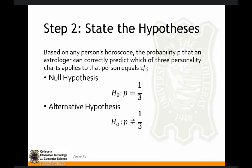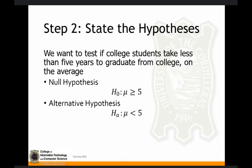Let's look at the difference between the null and alternative hypothesis with an example. The null hypothesis states that the probability of an astrologer correctly predicting three personalities in a person is one third, while the alternative hypothesis states that the probability is not equal to one third. Another example talks about the average time for a college student to graduate. The null hypothesis states that the average time would be greater than or equal to five years, while the alternative hypothesis states that it is less than five years — so it could be three, 3.5, or four years.